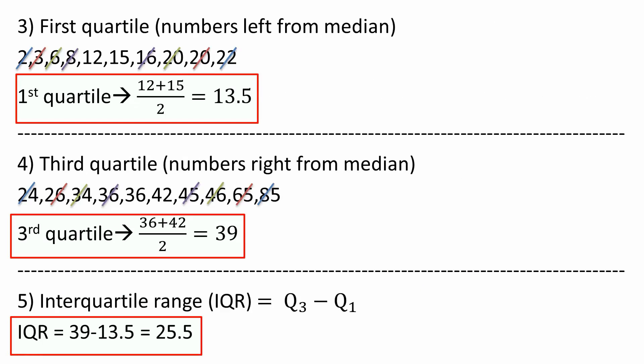Then I get essentially the median of that. Cross the 2, cross the 22. Cross the 3, cross the 20. 6, 20. 8, 16. I only have two numbers left, so I need to get the average of the two. 12 plus 15 divided by 2 is 13.5. This is the first quartile.